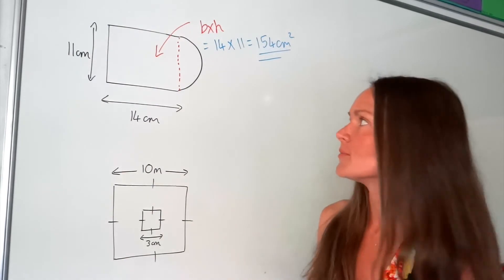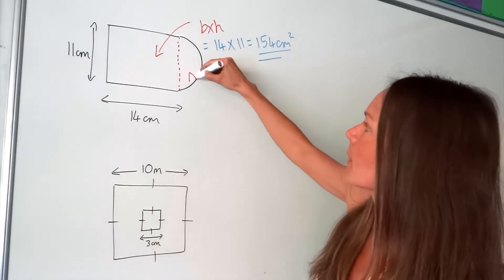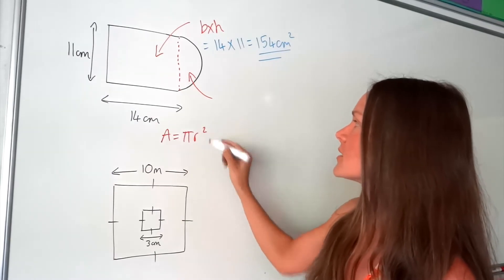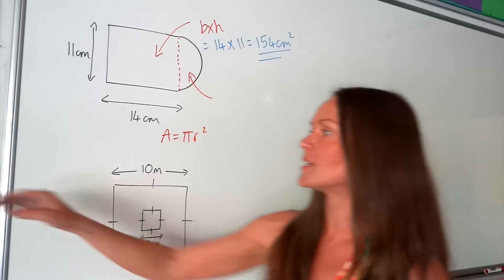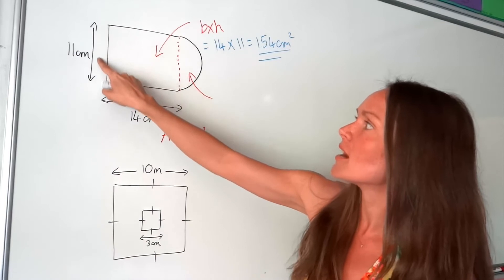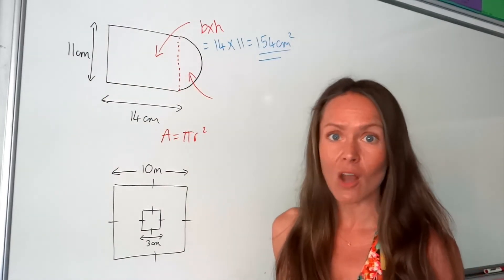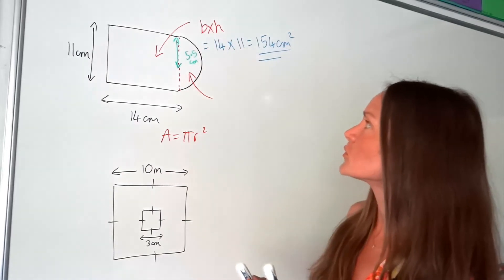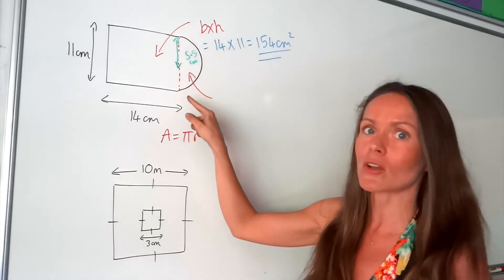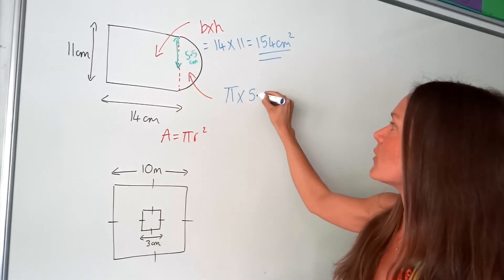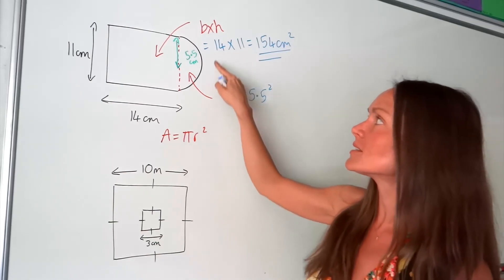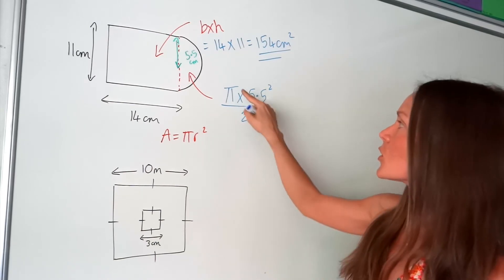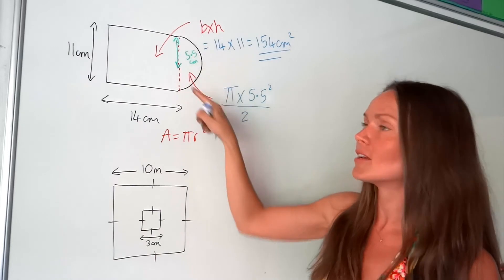Now here we've got half a circle. Remember, to work out the area of a full circle it's pi multiplied by the radius squared. The radius of this circle — well, we haven't been given the radius, but we do know the diameter. The diameter is 11 centimetres. Remember, the radius is half the diameter, so it's 5.5, because that's half of 11. So to work out the area of the whole circle we would do pi times 5.5 squared. But since this is only half a circle, we need to divide that answer by 2. So pi times the radius squared divided by 2 will give me the area of that half circle.